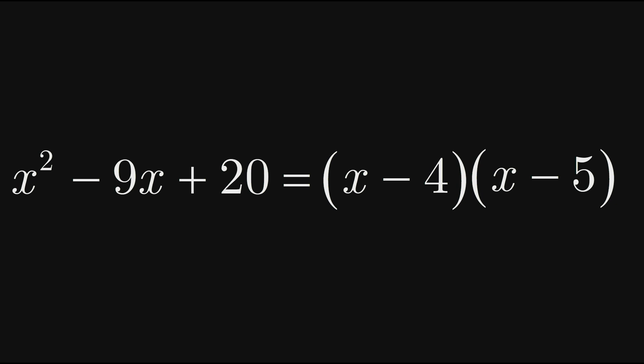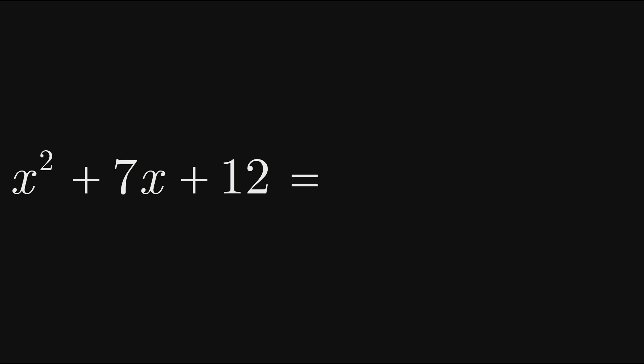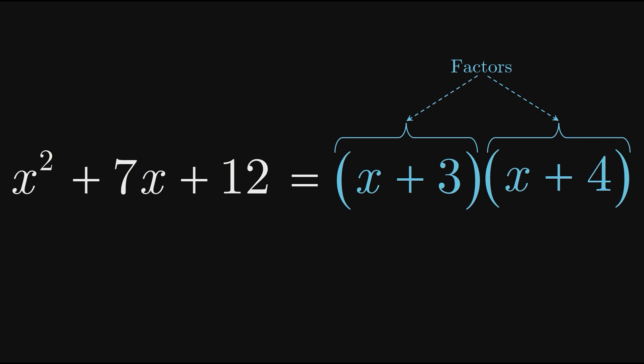For example, as we'll see later, we can factor the expression x squared plus 7x plus 12 by writing it as x plus 3 times x plus 4. And therefore, x plus 3 and x plus 4 are factors of x squared plus 7x plus 12.